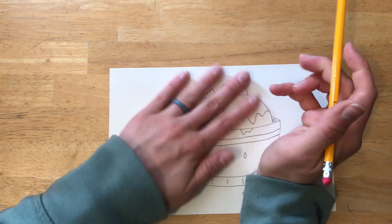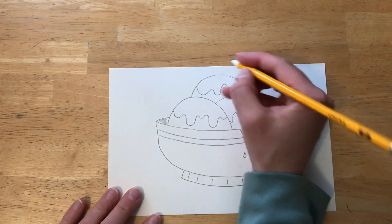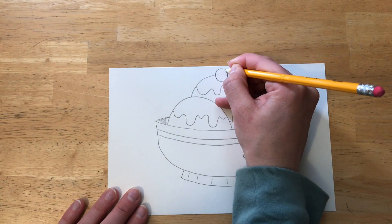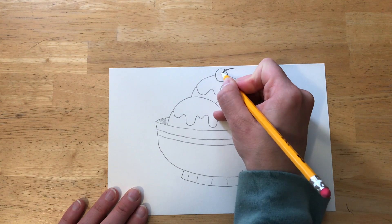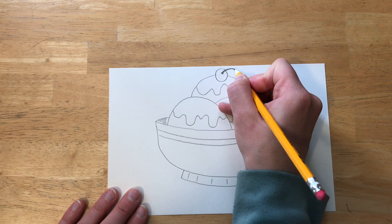I am erasing a small part of my line on top so that I can add a circle for a cherry. I love cherries on my ice cream. I think that is my favorite thing about sundaes.